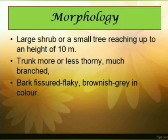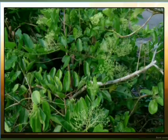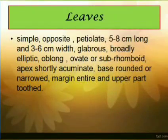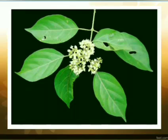Regarding the morphology or Swaroop of the plant, Brihad Agnimant is a large shrub or small tree which can extend up to a height of about 10 meters. The trunk is weak, much branched and more or less thorny in nature. Externally, the bark is brownish gray in color and is flaky and fissured. The plant possesses simple, opposite petiolated leaves about 5 to 8 cm in length and 3 to 6 cm in width. The leaves are oval to elliptical in shape with a short acuminate apex, entire margin, and sometimes the upper part of the leaf margin is serrated.